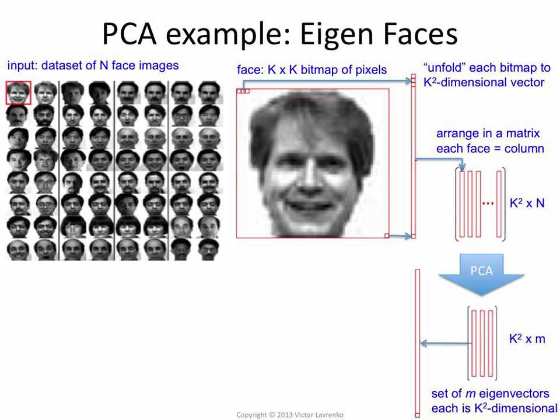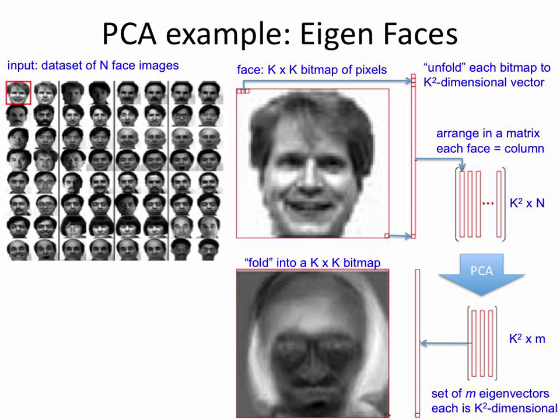You take one of the eigenvectors, which has k-squared numbers, and you fold it back into a bitmap: take the first k attributes, make a row of pixels; second k, make the second row; all the way down. You end up with something like that — which looks kind of interesting. It certainly has some recognizable features, and that's why this is popular: it's one of the few ways you can actually see what the technique is doing. For many other domains you can't see it, but here you can.